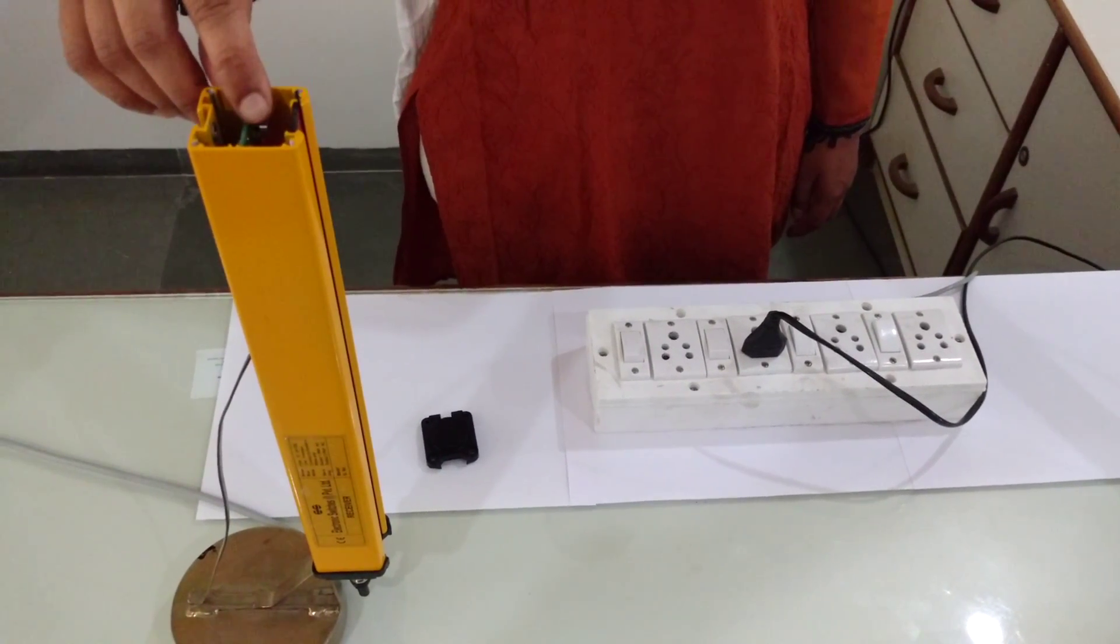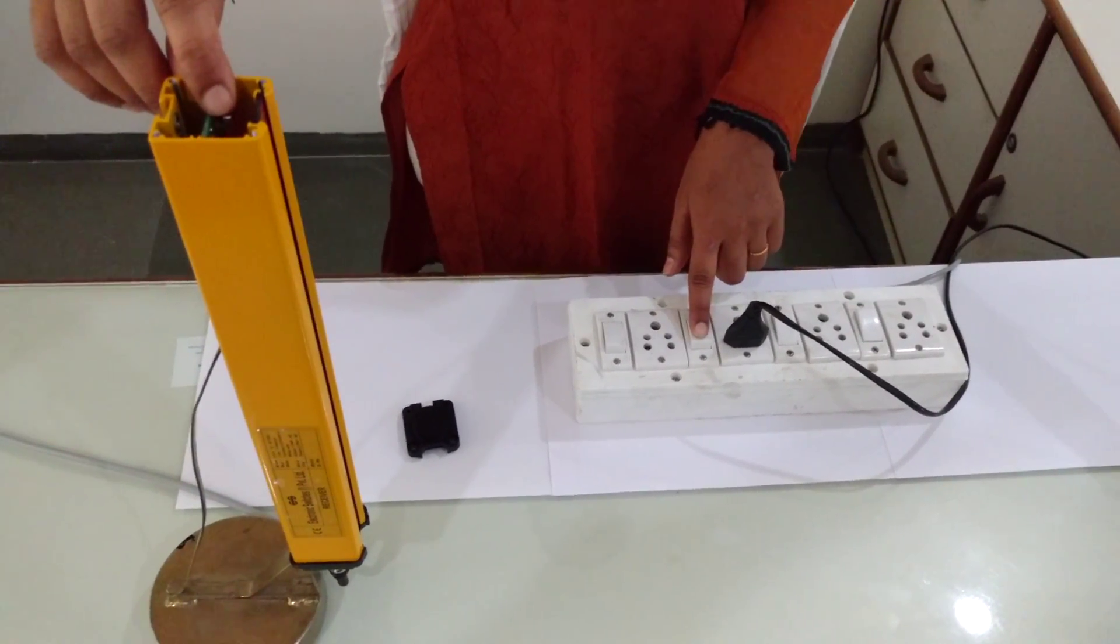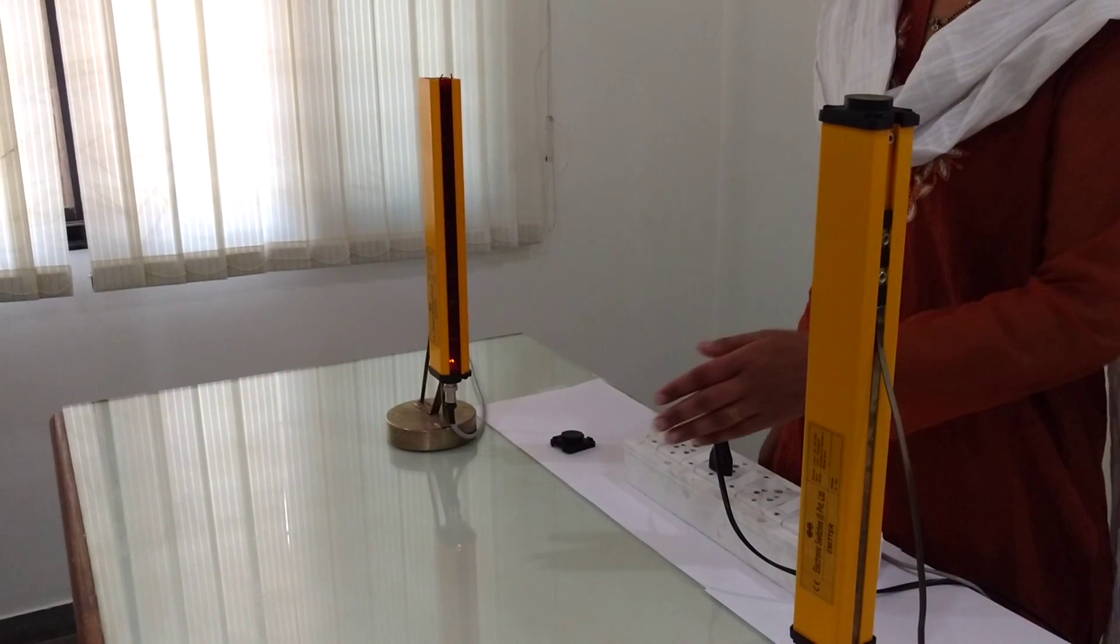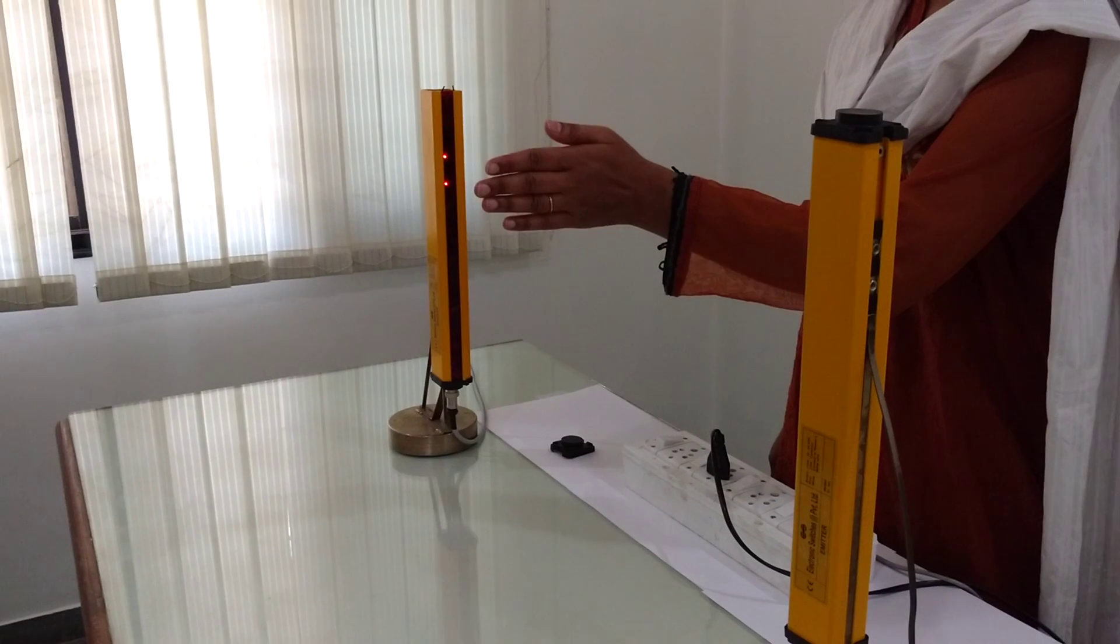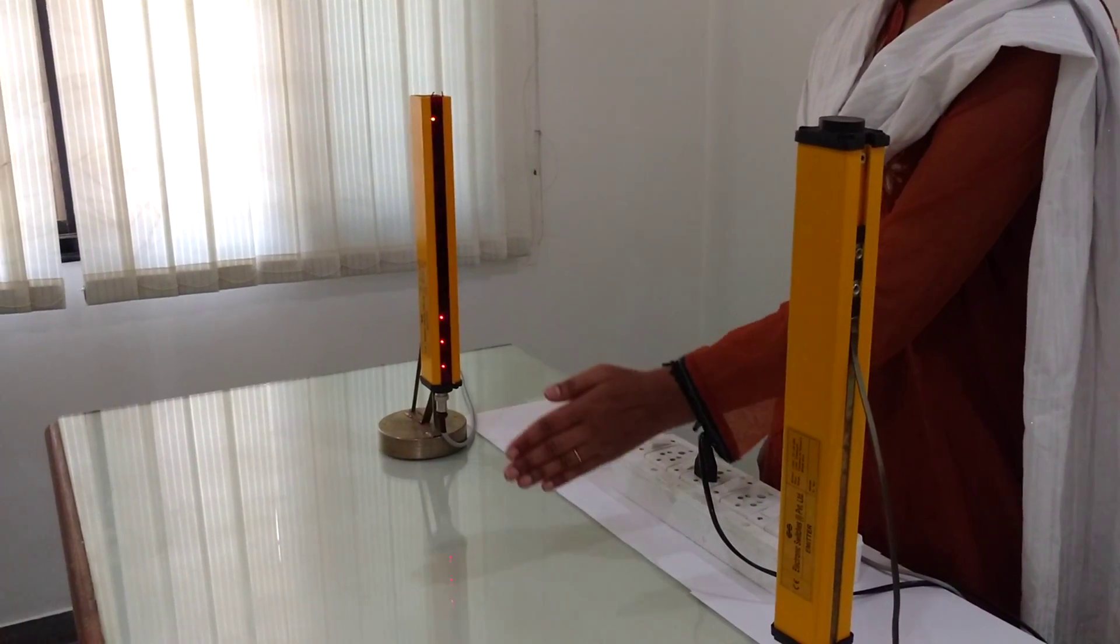Now keep the bypass switch pressed and then switch on the power supply. And now the bypass mode has been removed and all the individual beams of light curtain are working. Thank you.